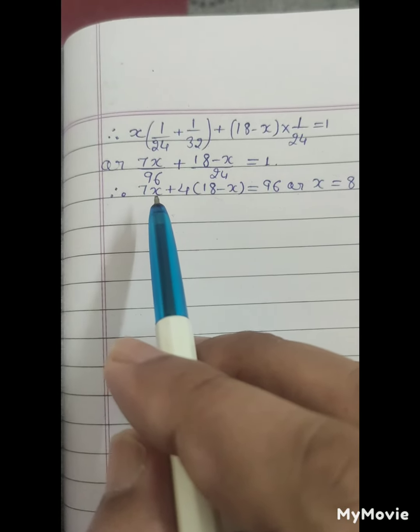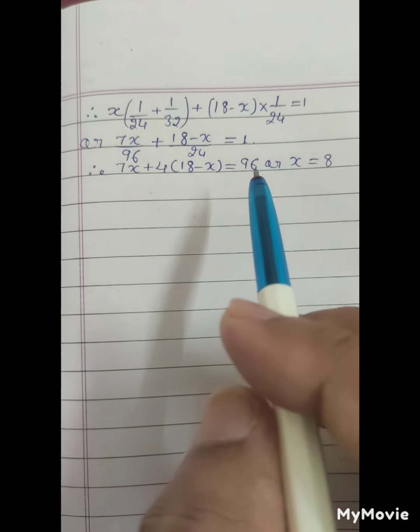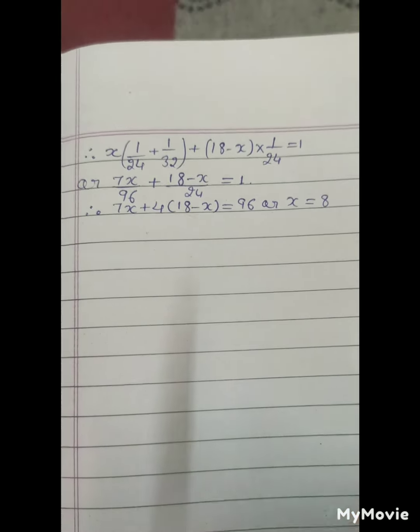So 7X plus 4 into 18 minus X equals to 96, or X equals to 8.